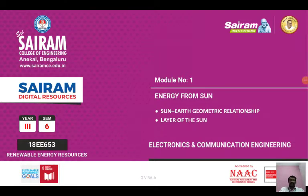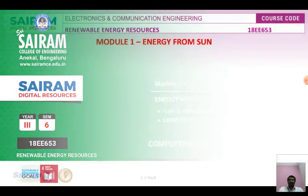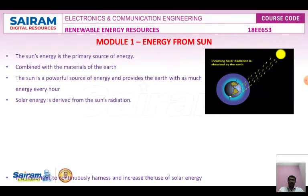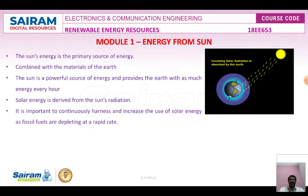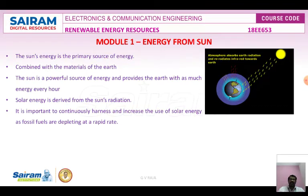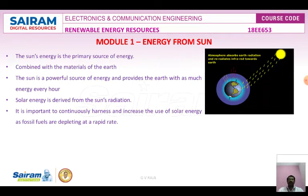Welcome to the lecture video series on renewable energy resources. Here in module one, we are going to see chapter two: energy from the sun. Today's topic is the sun-earth geometric relationship and layers of the sun. The sun's energy comes in two useful forms: light energy, which is converted into electrical energy, and heat energy, which is converted into mechanical energy and electricity.